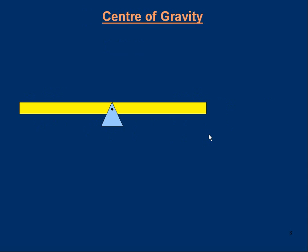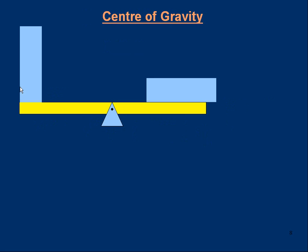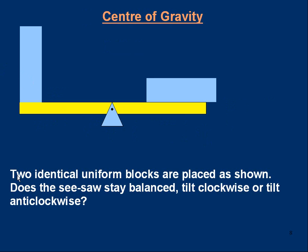Now, a problem for you to solve. Here's a seesaw that is nicely balanced without anything on it. We're going to put two objects on it. Two identical uniform blocks — same density, same size, same shape — are placed as shown: one on its narrow base and one on its side. The question is: does the seesaw stay balanced, tilt clockwise, or tilt anticlockwise? Pause the video, look at the diagram carefully, and see if you can work it out.